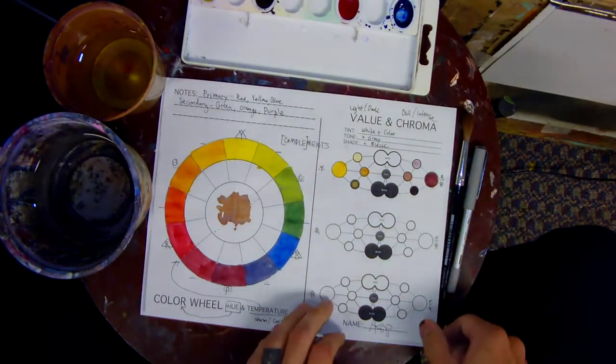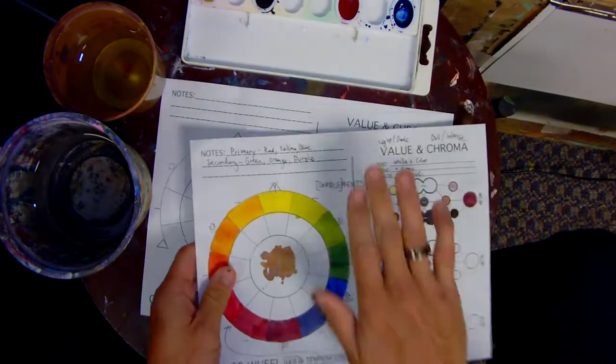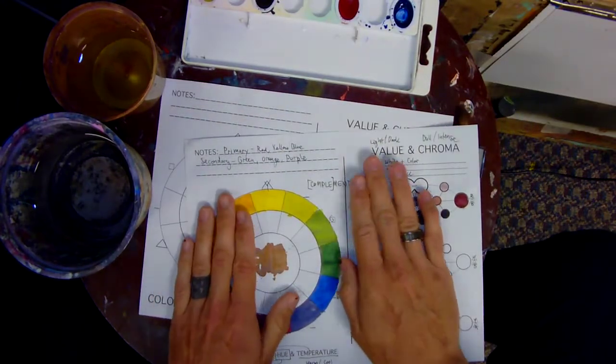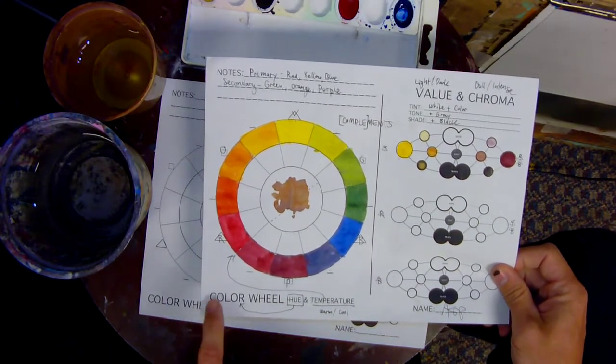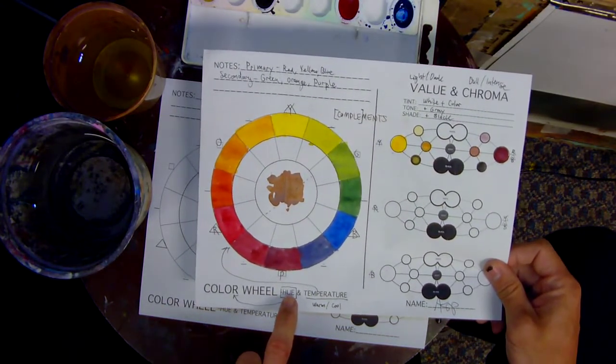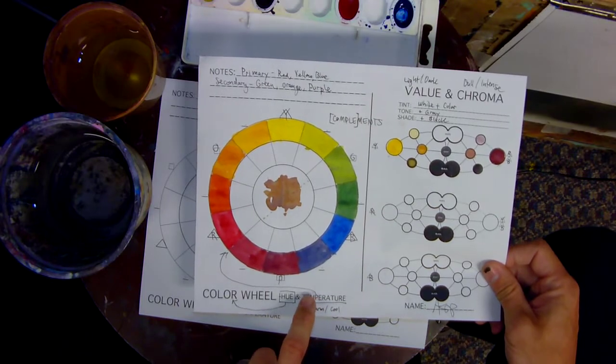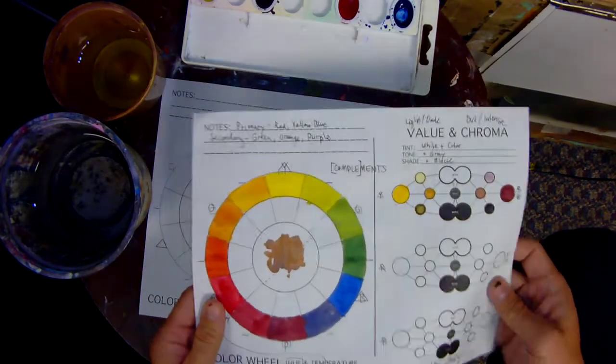Alright art students, this is a color wheel. We're going to deal only with this side today. This is what your final product is going to look like, and as you can see down here we're dealing mostly with hue and temperature. We'll get into value and chroma on the other side.